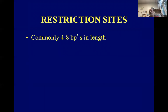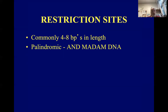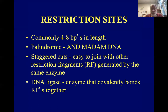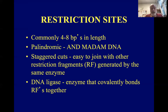Restriction sites tend to be four to eight base pairs in length. They are palindromic — a DNA palindrome is something spelled the same forwards and backwards. Many of them produce staggered cuts, but not all. DNA ligase is then necessary to bond the different restriction fragments together. RF stands for restriction fragment — just the piece of DNA generated by the restriction enzymes.